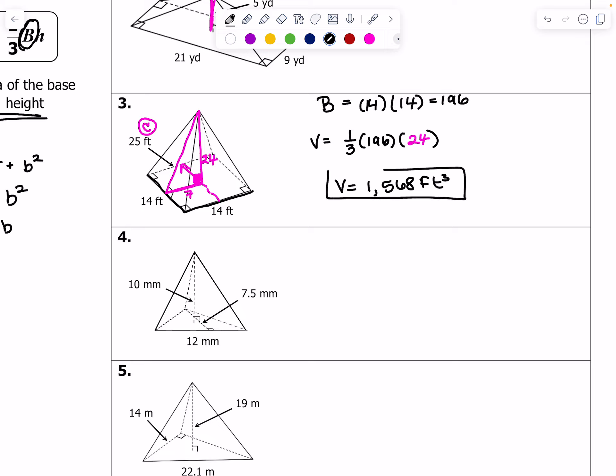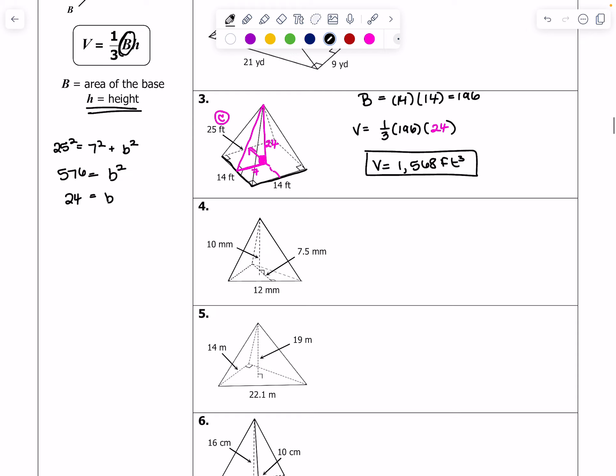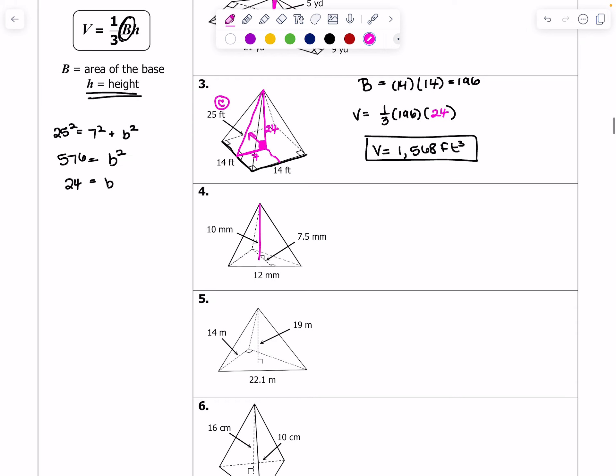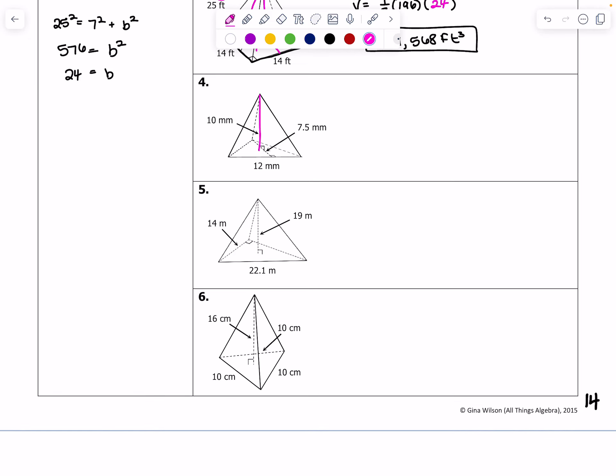Okay. For number four, no tricks. It's pretty straightforward. Find the area of the base and then multiply it by the height, which is stated right here. For five, you will have to use Pythagorean theorem in order to find, let's see. In order to find the height, basically, of this. And you need that for the area. Actually, you know what? Let's do, let's do five together.